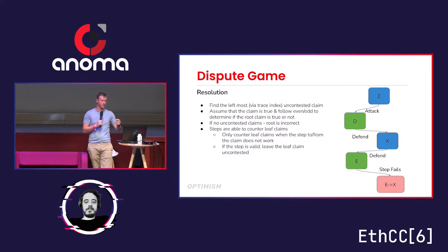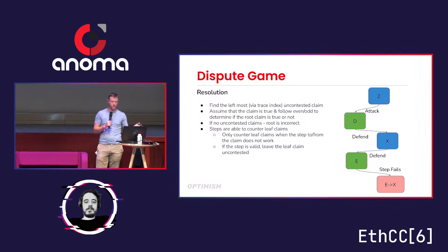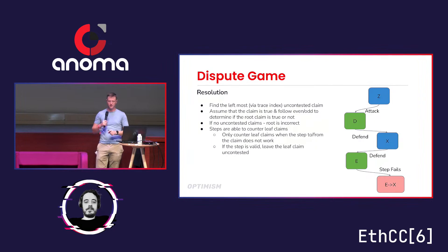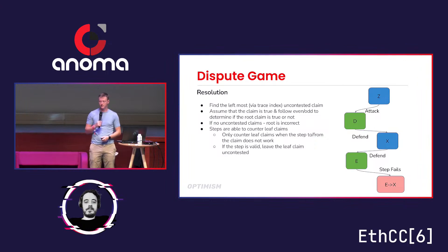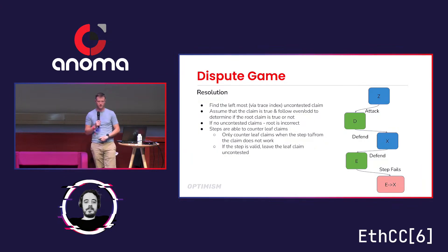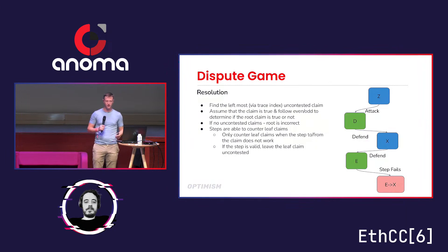With resolution, we have all of these claims and we've run Canon, so we have to go back up and say: do we agree with the root claim or not? The rule is: we find the leftmost uncontested claim and assume it's true. The leftmost claim really matters when there are multiple actors playing this game. We assume it's true because otherwise it would have been countered. If there are no uncontested claims — because a step failed — then we default to the root being true. The step is really only about the final leaf claim and has slightly more complicated rules.